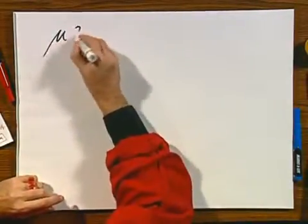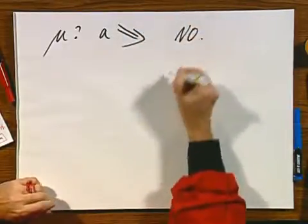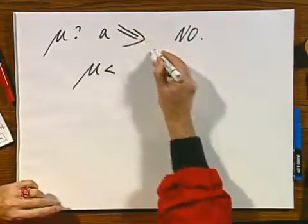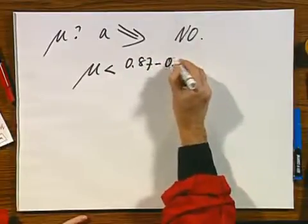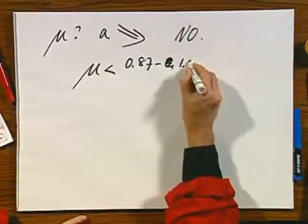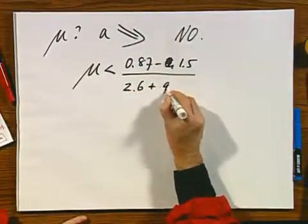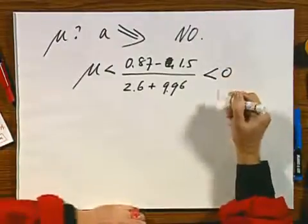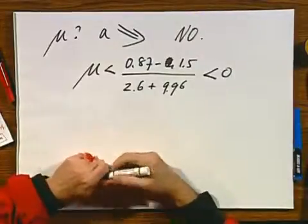Is it possible somehow that if we adjust mu, that A would be in this direction? And the answer is no. Because if you look at our criterion, what mu should be for A to go down, then you would need 0.07 minus 1.5 divided by 2.6 plus 9.96. And this is smaller than zero. This is negative. And so this has no physical meaning. And so this is not meaningful.